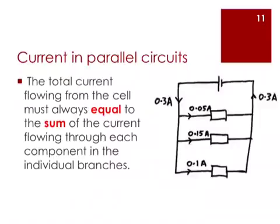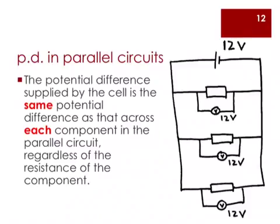In the parallel circuit, the total current flowing from the cell must always be equal to the sum of the current flowing through the individual components. For example, 0.05 amperes plus 0.015 amperes plus 0.1 amperes gives you the total current flowing into the battery. In the parallel circuit, the potential difference supplied by the cell is the same as that across each component regardless of the resistance of the component. So if the EMF of the battery is 12 volts, each of the electrical components will have a potential difference of 12 volts.